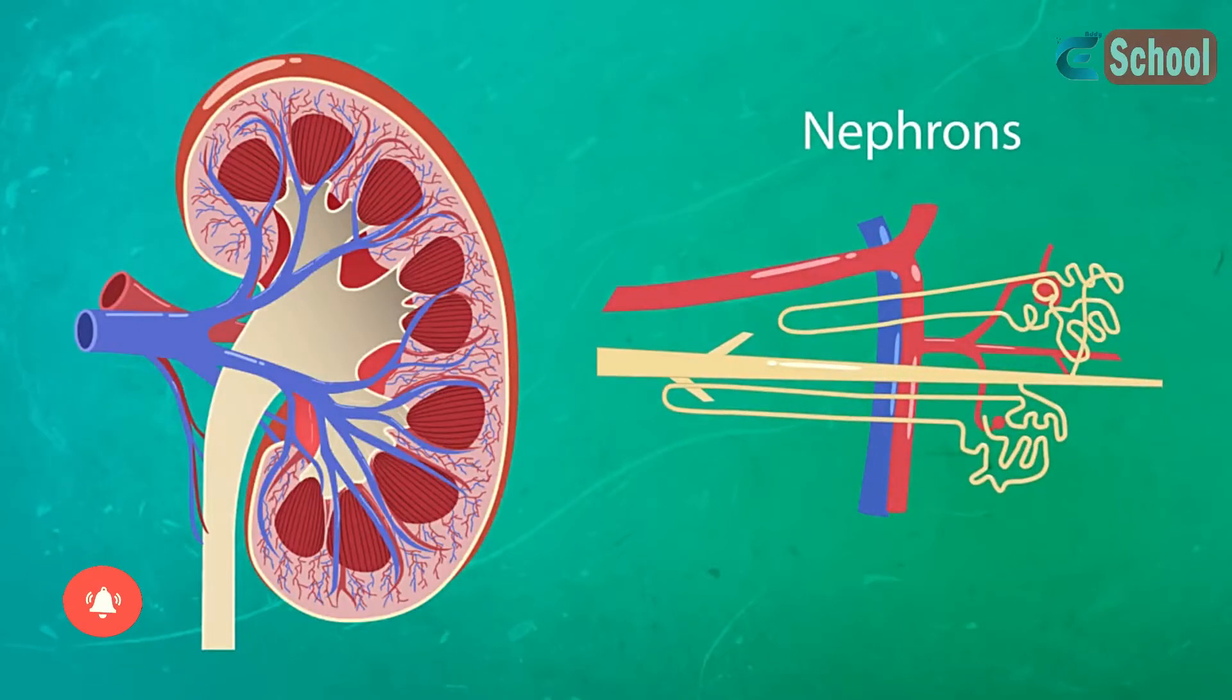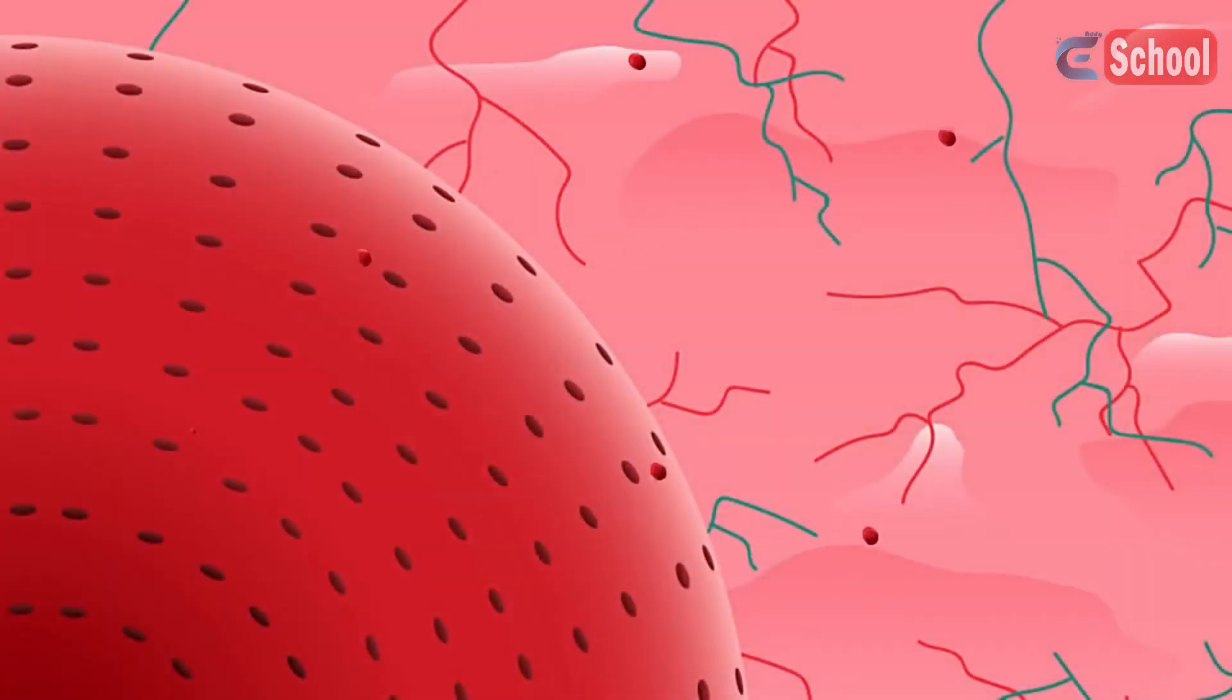As the blood flows into the kidney in the renal artery, it splits into smaller and smaller arteries. These eventually become capillaries. Each capillary then forms a bundle called a glomerulus. The blood is now under very high pressure, and the glomerulus has little pores in it that allow parts of the blood to be squeezed out.